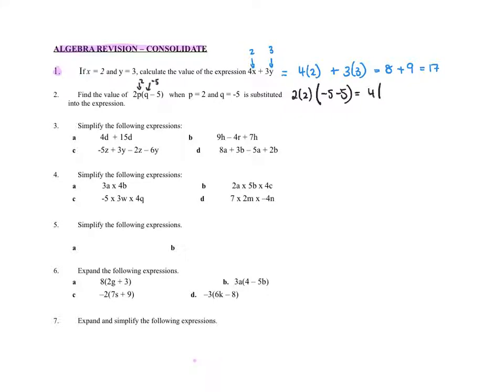So let's just tidy that up. 2 times 2 is 4. And minus 5 minus 5 is minus 10. So then we have 4 times negative 10, which actually is negative 40.